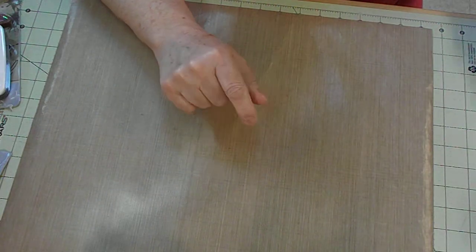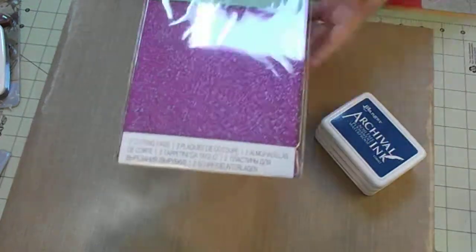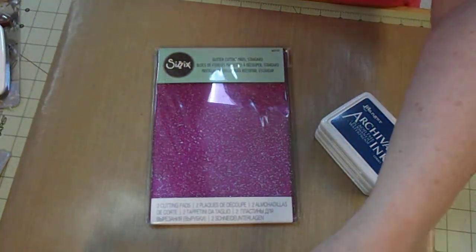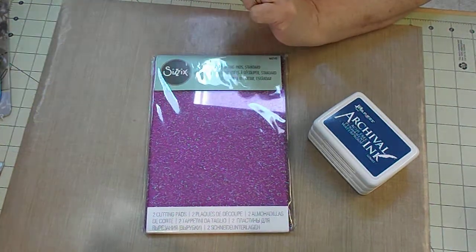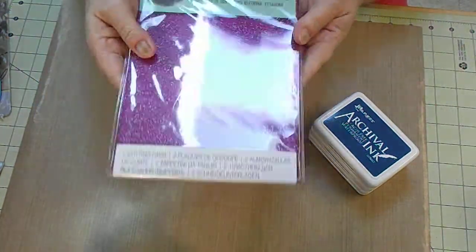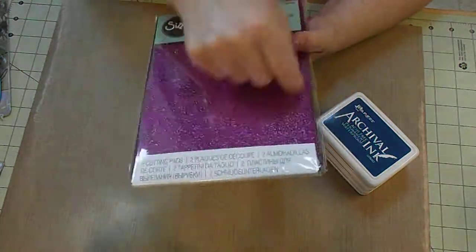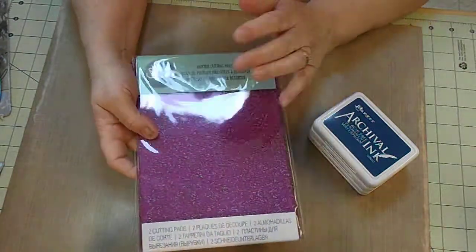A while back I had ordered from Joann's and they had purple cutting pads. I just think that was so cute, purple cutting pads. I needed some new cutting pads. I haven't even used these yet. I don't want to use them because they're going to get all crapped up with cut marks and stuff. But I did order these. They were on sale for I believe it was $8.99.